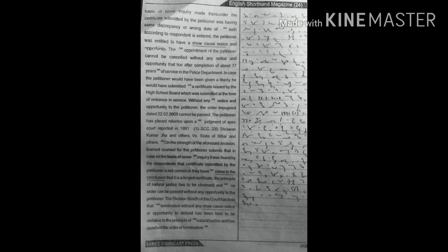The petitioner has placed reliance upon a judgment of apex court reported in 1991 SCC 330, Shravan Kumar Jha and others versus State of Bihar and others. On the strength of the aforesaid decision, learned counsel for the petitioner submits that in case on basis of some inquiry it was found by the respondent that certificate submitted by petitioner is not correct or they have come to conclusion that it is a forged certificate,